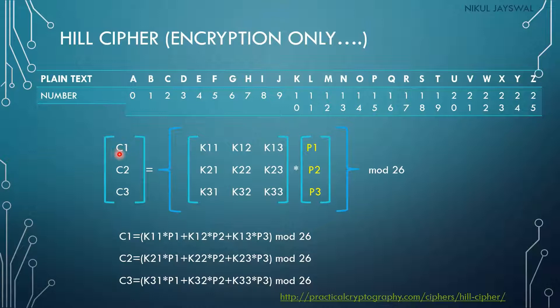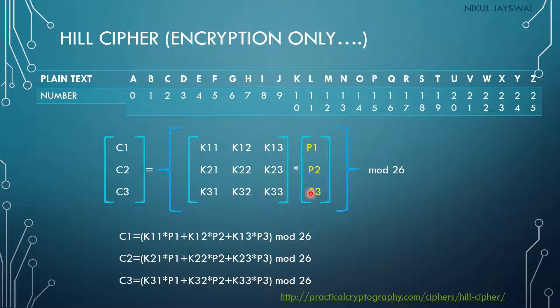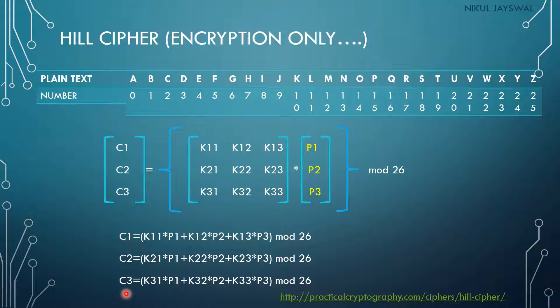The encryption formula for three characters is: C1 = (K11×P1 + K12×P2 + K13×P3) mod 26; similarly for C2 and C3 using their respective key rows. If the result exceeds 25, we apply modulo 26 to get the final ciphertext character. This is how with a three-by-three matrix we can encrypt three letters of plain text.